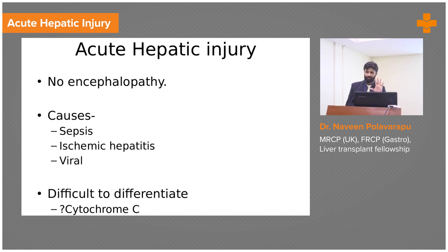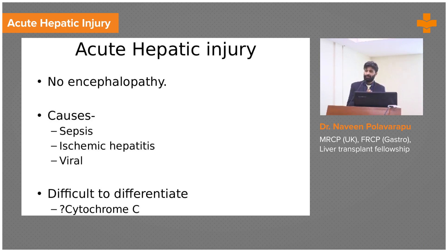The most important liver synthetic functions that we look at are the bilirubin, the albumin, and the INR for coagulation. Somebody who has very high ALT and AST but their INR is well preserved — 1.5 up to 2 — and their albumin is reasonably good, and they don't have any encephalopathy, I'm less worried about those patients. They are in acute hepatic injury.